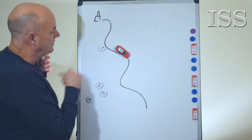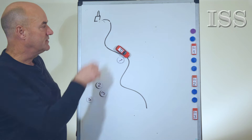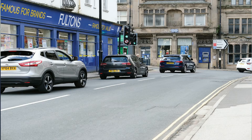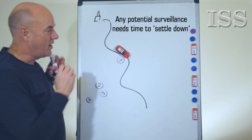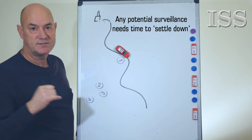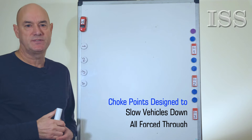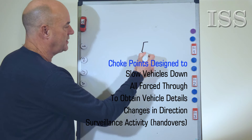With that in mind, if we have the first choke point quite far away from the start point, the surveillance team will be allowed to settle down. They'll get their ducks in a line — they'll have the eyeball, the backup, the trail car. What we want to do is identify all of them and not have them detached all over the place. So try and get choke point one a fair distance away from the start point.